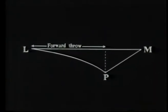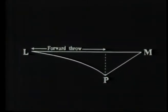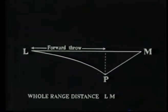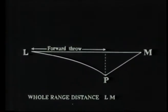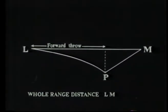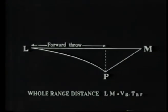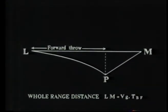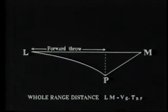To find the forward throw, it is first necessary to calculate the whole range distance Lm, which is the distance the aircraft travels while the bomb is falling. This is equal to the aircraft's ground speed, Vg, multiplied by the time of bomb fall.